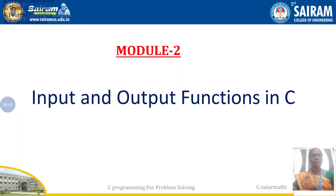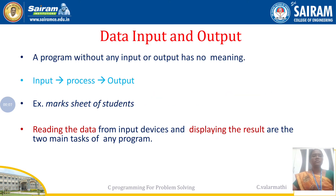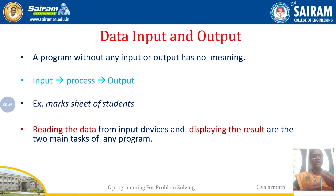Hi students, today our topic is input and output functions in C. We know that a program is a set of instructions specifically written to perform a specific task. In order to write a program, we need to get inputs from the user side, and according to the logic and implementation procedure we need to write the code. That coding part is considered as the process.